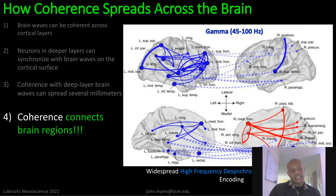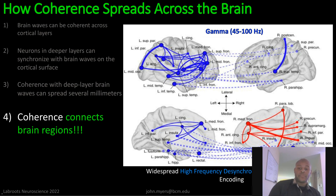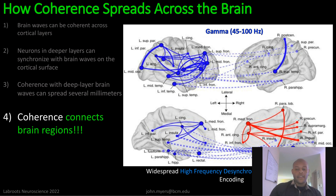These different frequency bands are conveying different information at the same time. Imagine tuning into a radio station while driving — you're receiving inputs from all radio stations, but you tune into the channel you want to get information from. The brain uses a very similar mechanism of communication.